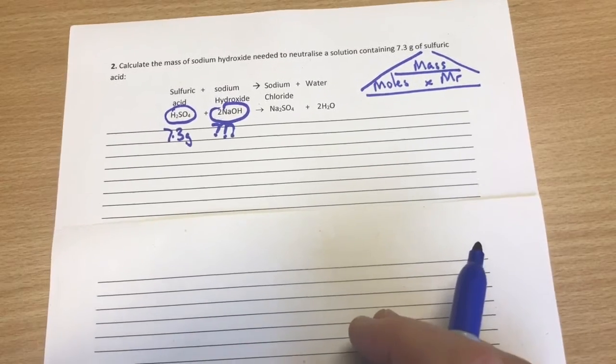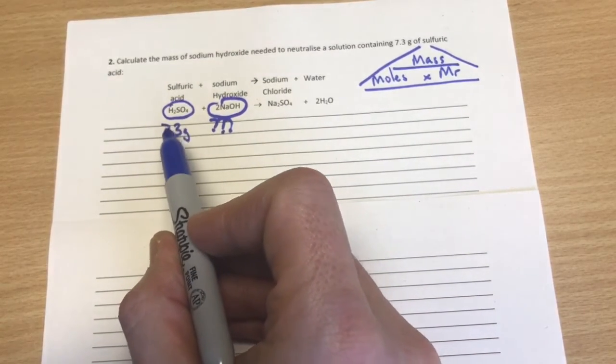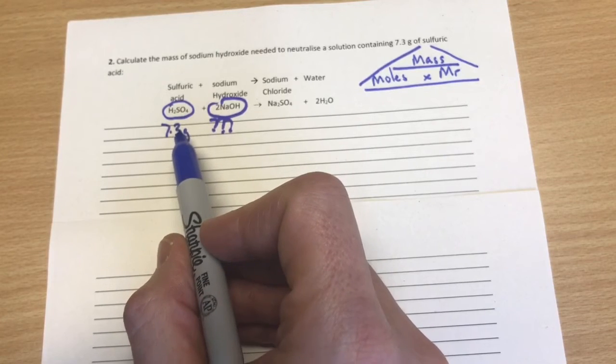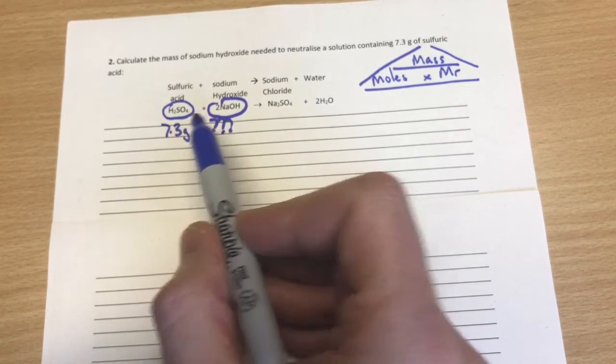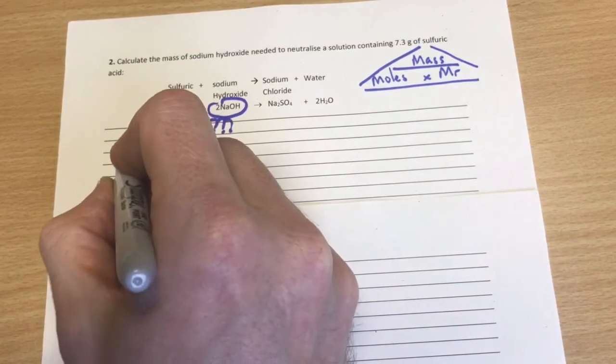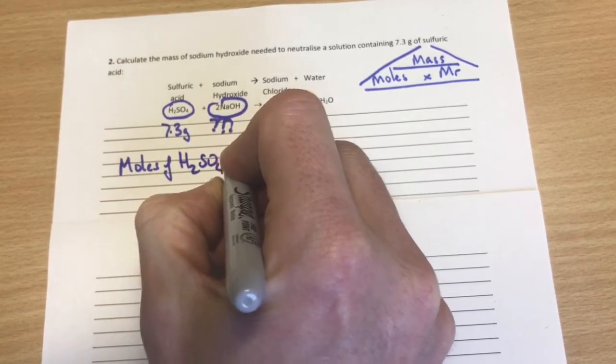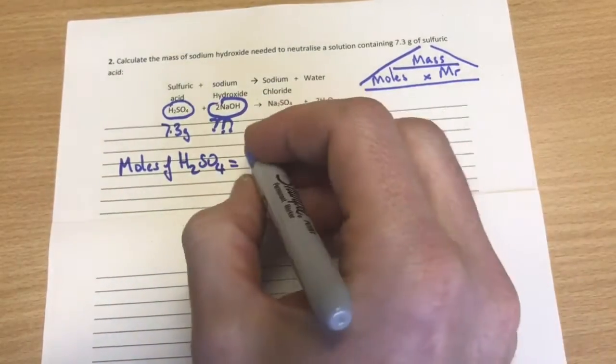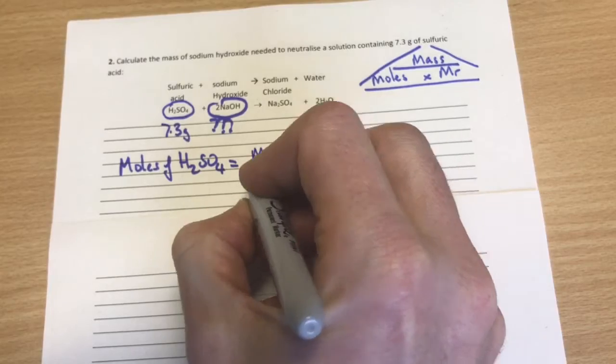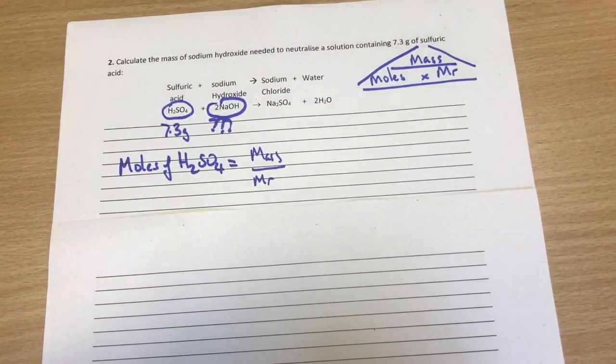Okay, the format is the same for all these. So our first job is we're given a mass for sulfuric acid. What we need to do is convert it into moles. So we use our triangle over here. And what we're trying to do here is find the moles of the H2SO4, the sulfuric acid. And if we use this triangle, the moles is the mass divided by the relative formula mass. Okay, the MR.